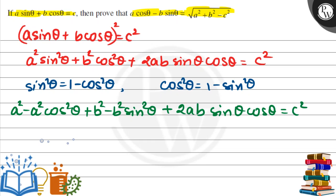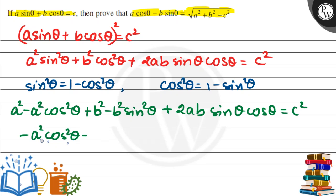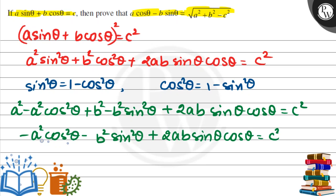This equals c². So here we can see that a² + b² as it is, minus a² cos²θ minus b² sin²θ plus 2ab sinθ cosθ is equal to c². Rearranging: this gives us c² minus a² minus b² on the right side.